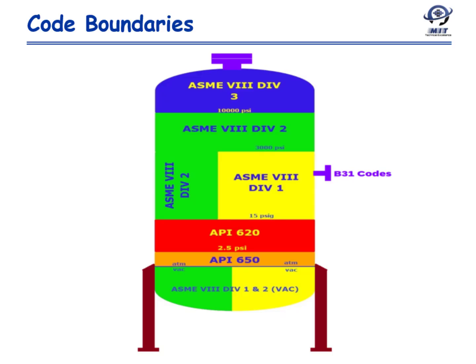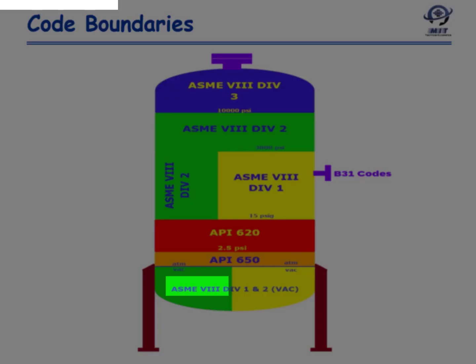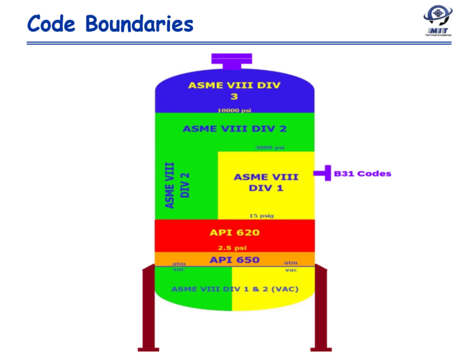Division 2, as per code recommendation, can be applied in the vacuum zone and from 15 psi gauge to 10,000 psi. The code does not limit its upper range, so it can be applied above 10,000 psi, although a good alternative in that range is Section 8 Division 3.